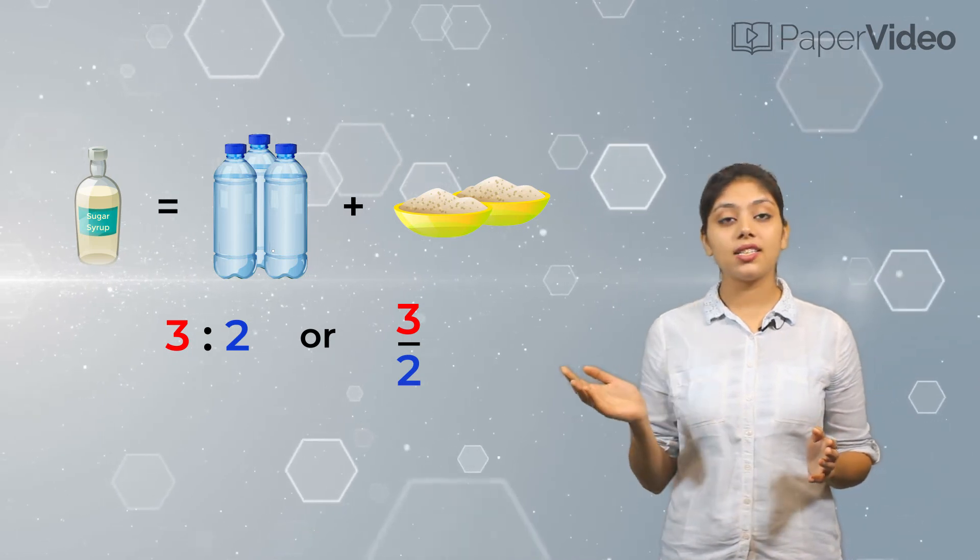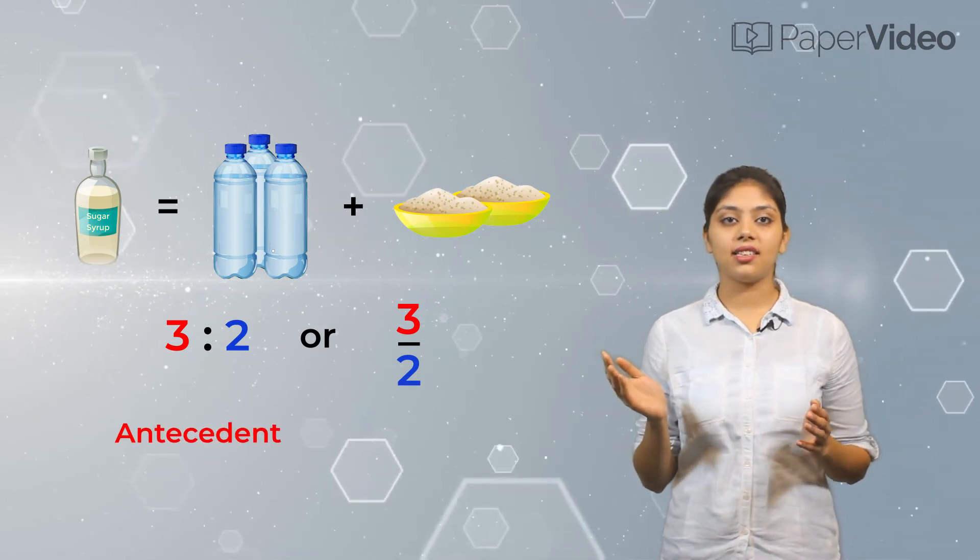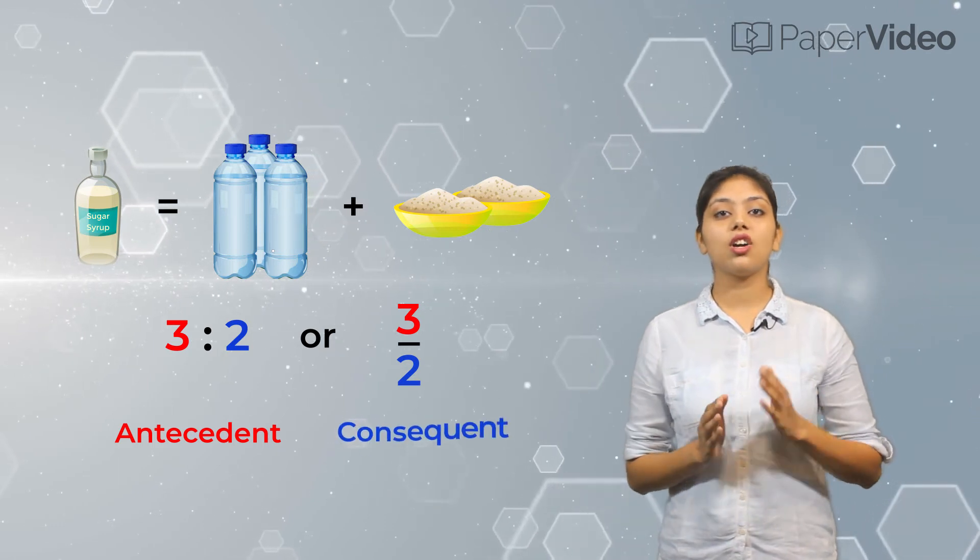In a ratio, the first term is called the antecedent and the second term is called the consequent.